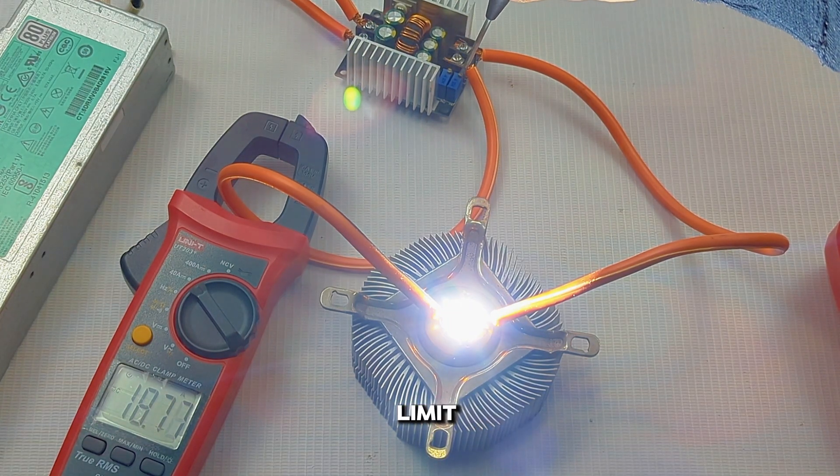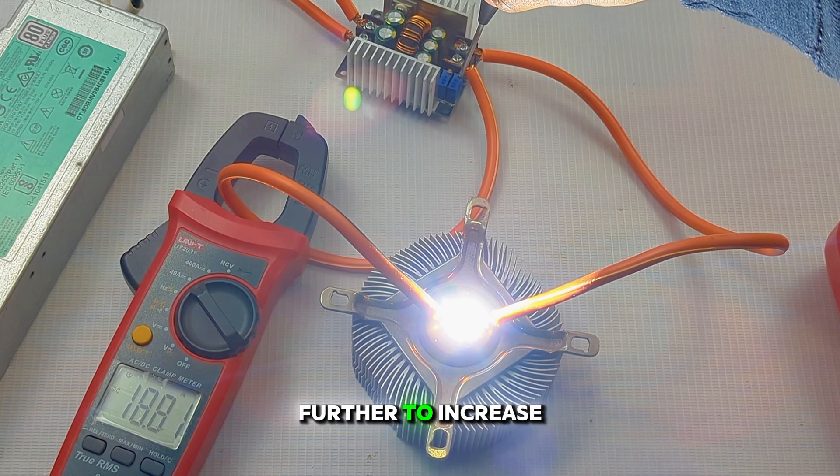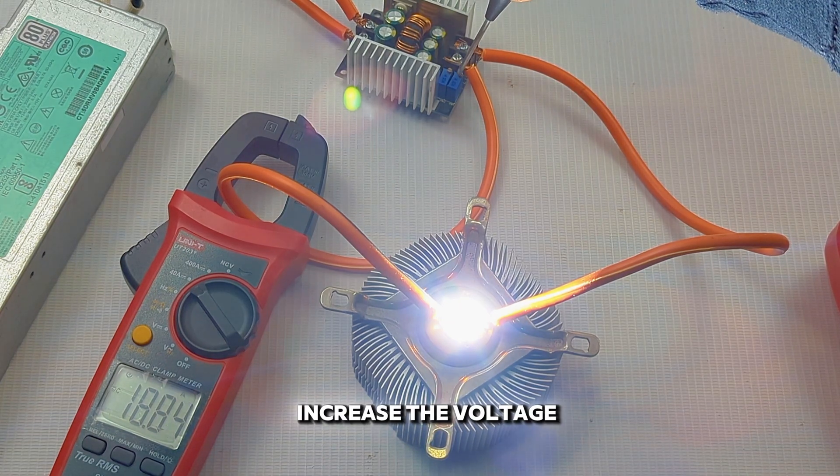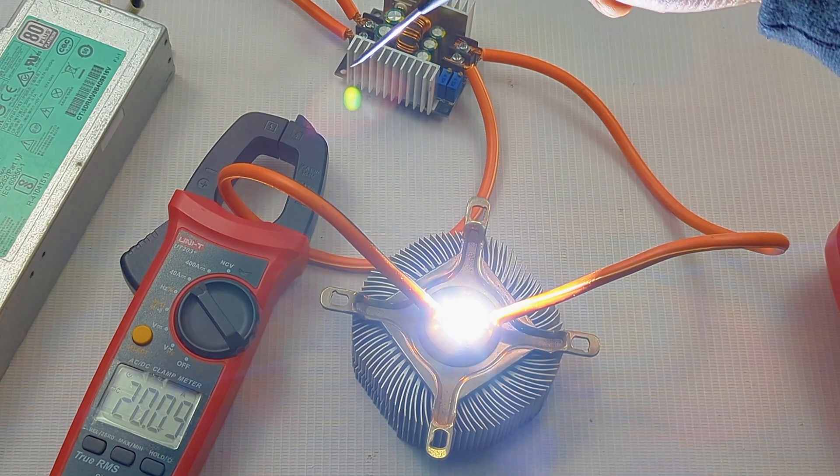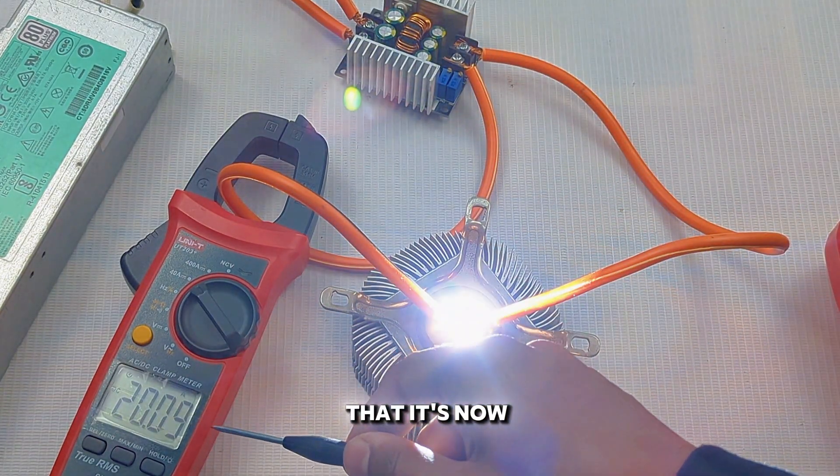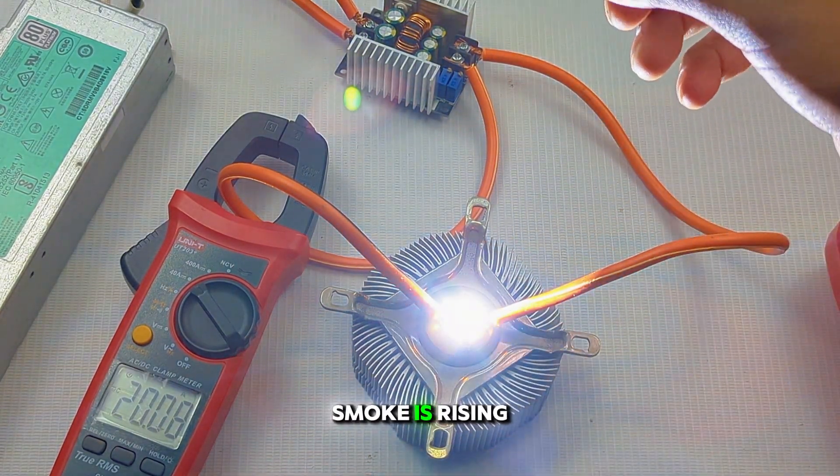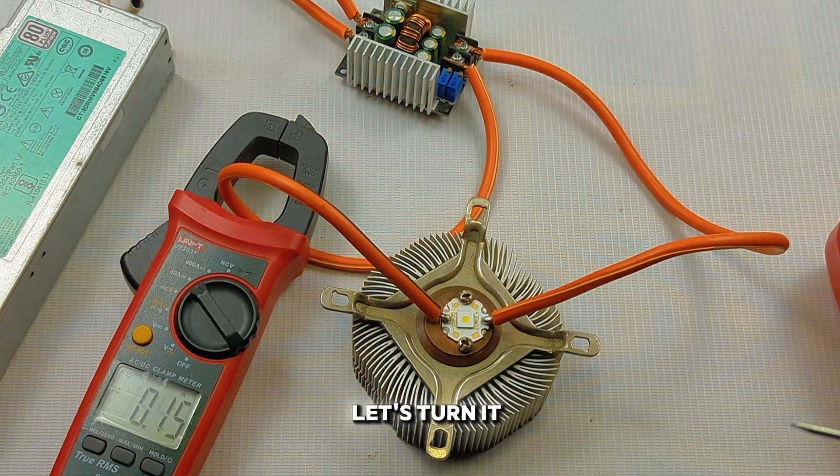Okay, that's the limit. Current is not increasing further. To increase the current, I have to increase the voltage. You can see it's now at 20 amps. Smoke is rising from the LED. Let's turn it off.